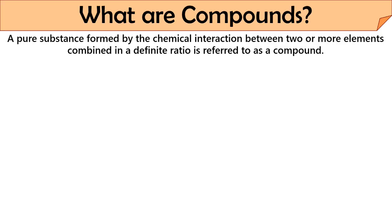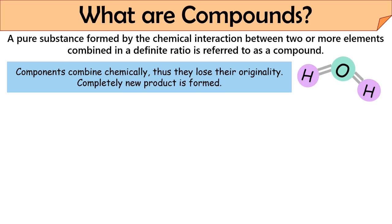Now let us discuss about compounds. According to chemistry, compounds are pure substances. We can define a compound as a pure substance formed by chemical interaction between two or more elements combined in a definite ratio. Talking about the properties of compounds: the components of compounds are chemically combined, due to which they lose their originality. After the reaction is completed, a totally new product is formed whose characteristic properties are completely different from those of the original constituent elements.